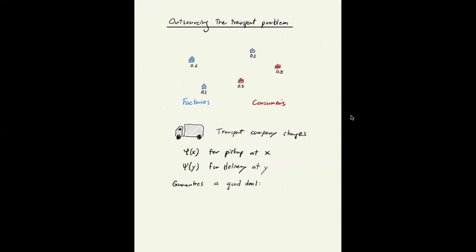In other words, what we pay them, which is for picking up one unit of goods at X and delivering it at Y, which is phi of X plus psi of Y, should be less than or equal to the cost that we would pay if we transport one unit of goods ourselves from X to Y.